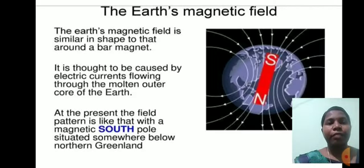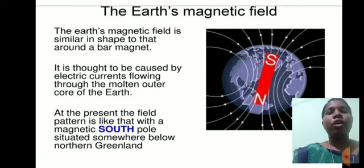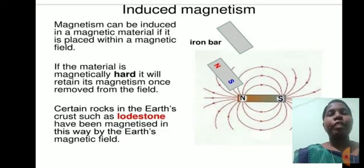The Earth's magnetic field is similar in shape to that around a bar magnet. It is thought to be caused by electric currents flowing through the molten outer core of the Earth. At present, the field pattern is like that with a magnetic south pole situated somewhere below northern Greenland.